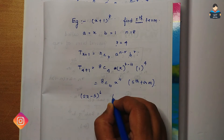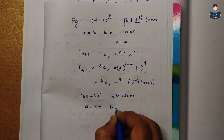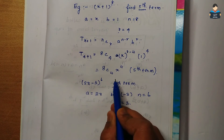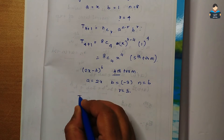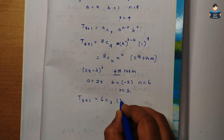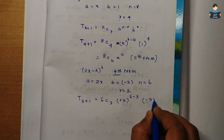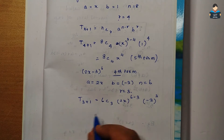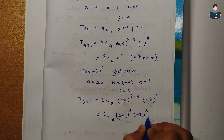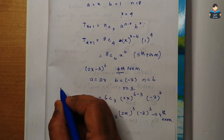Example 2: (2x - 3)^6, find the 4th term. Here a = 2x, b = -3, n = 6. For the 4th term, r = 3. So T4 = T(3+1) = 6C3 * (2x)^(6-3) * (-3)^3 = 6C3 * (2x)³ * (-3)³.